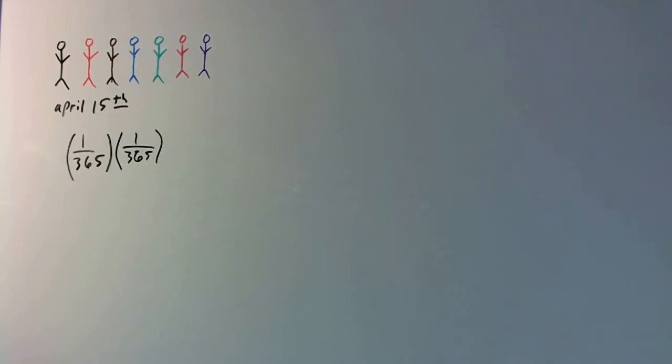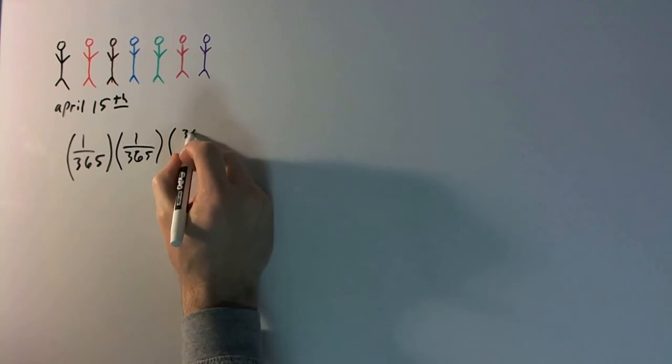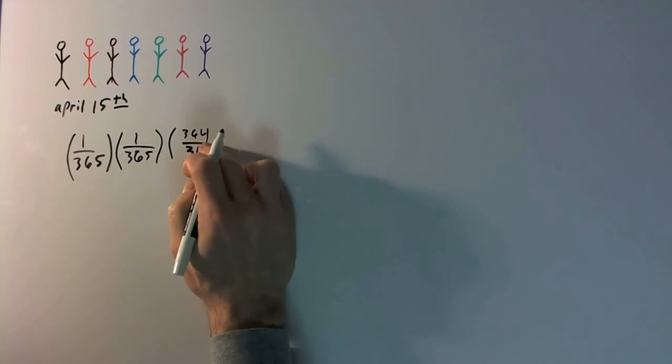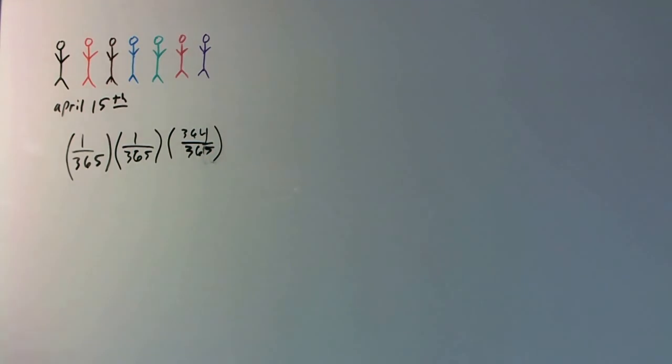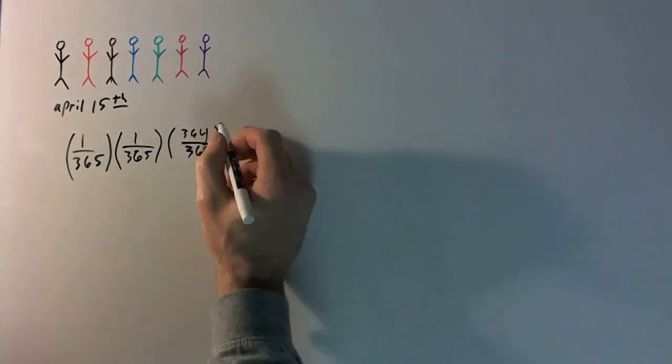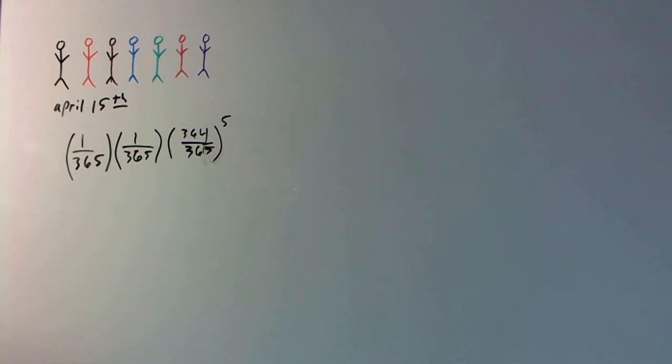So what about the other people? Well, they can have any other birthday besides April 15th. So let's just do this all in one shot here. So the second, third, fourth, and fifth person will have the probability that they have any other birthday besides April 15th will be all the other days in the year, which is just 364 out of 365, not a four. And so we have five of these, five people here. So we would do this five times, so just for simplicity's sake, I'll just raise this to the fifth power.